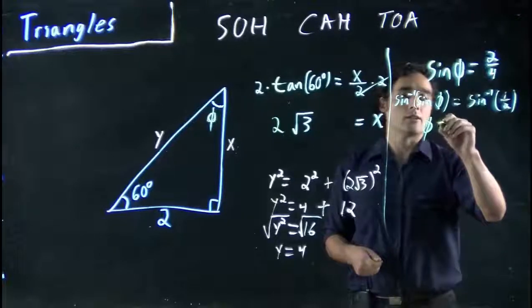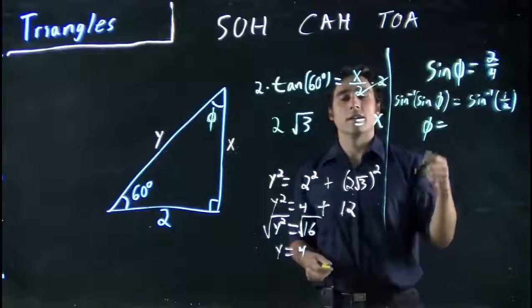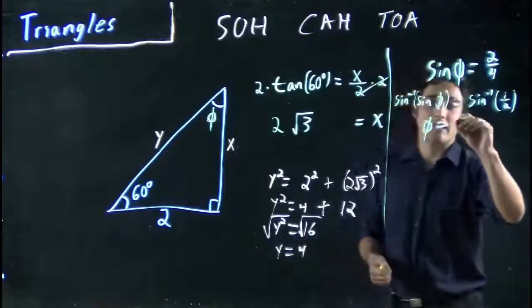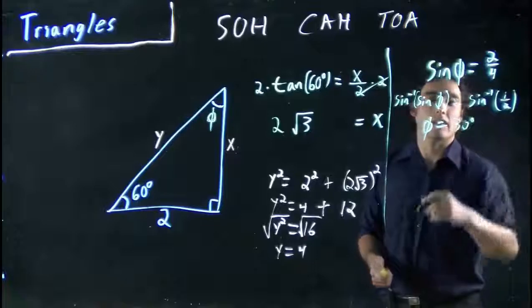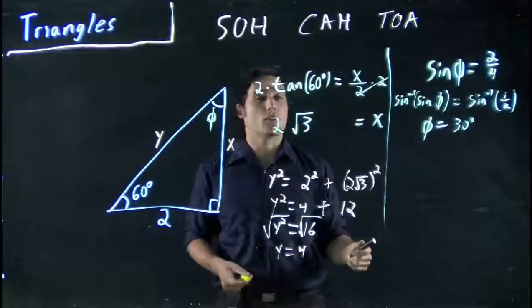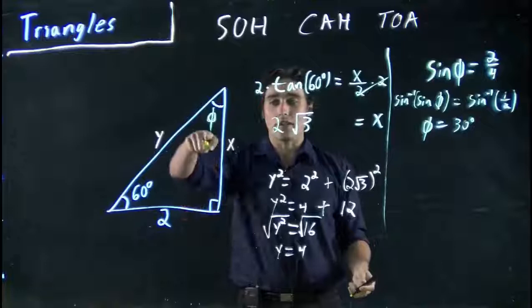So, phi equals sine to the minus 1 of 1 half, which we'd actually find is 30. Punch that in your calculator, sine to the minus 1 of 0.5 is going to give you 30 degrees. So, that would have solved this angle.